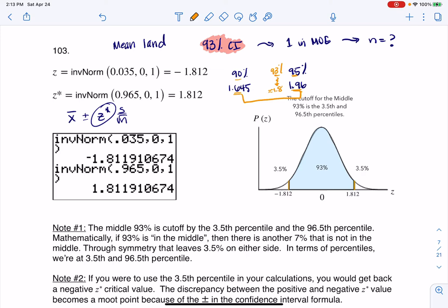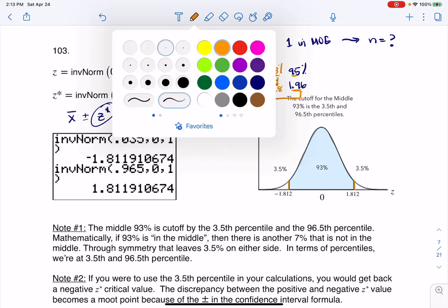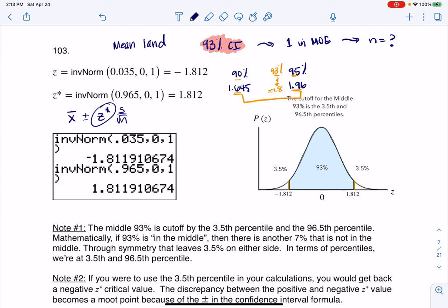Now in order to figure that out, we have inverse norm, we can go ahead and use inverse norm, but the problem here is we need to take this 93% confidence interval.